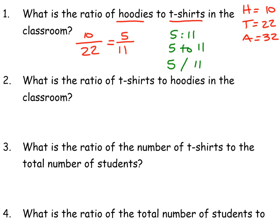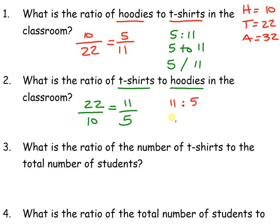Let's look at the second question: what is the ratio of t-shirts to hoodies? Now it's the same question but flipped around. So we have 22 over 10 as a fraction. We know it can simplify because we just did it — so we get 11 over 5. Write it in three different ways: 11 colon 5, 11 to 5, and 11 slash 5.